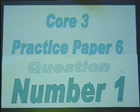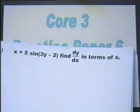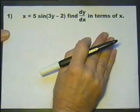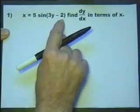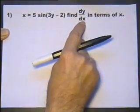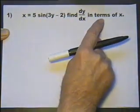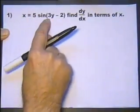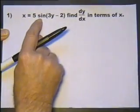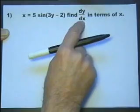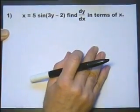Core 3, practice paper 6, question number 1. We've got this equation in terms of x and y, and we've got to find dy/dx, and our answer has got to be in terms of x. Now the first thing we notice is that this equation is not written as y equals, so it's not a straightforward differentiation to find dy/dx. We'll need to do a bit more thinking about this.